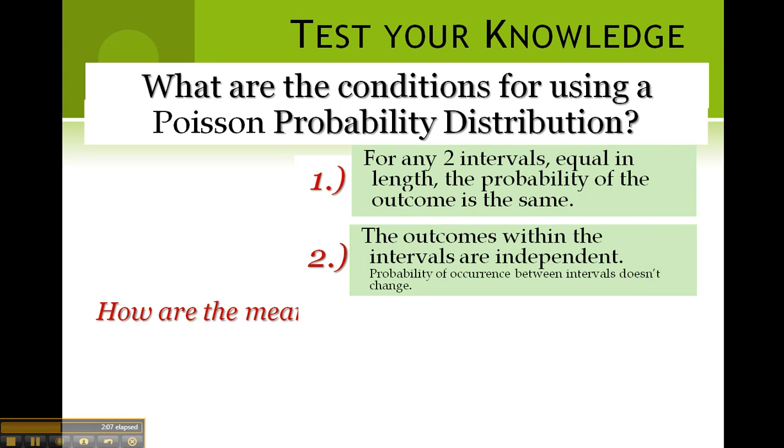How are the mean and standard deviation for a Poisson probability distribution related? Sigma squared equals mu. Now, let's discuss some new knowledge.